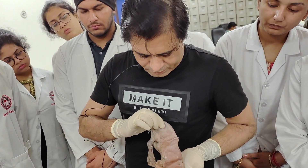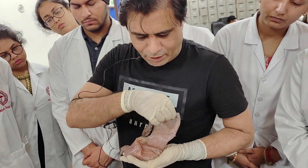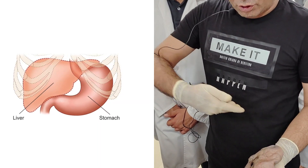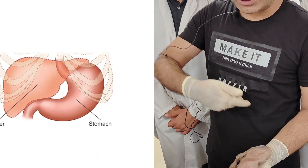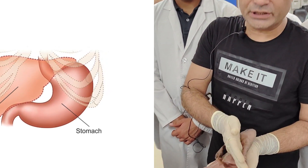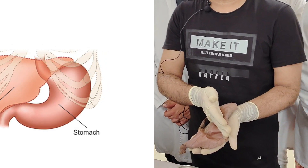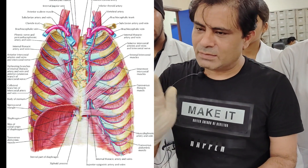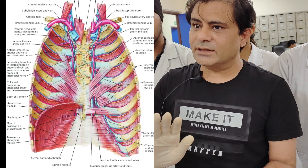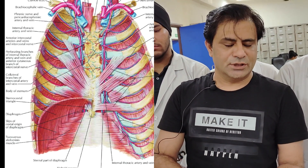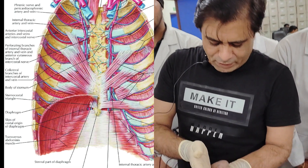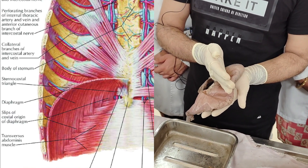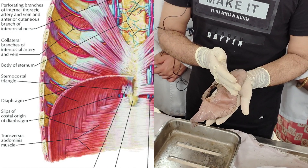The important point is that if we keep it like this, this is our left coastal margin. The coastal margin will not be touching this — why? The space. Posteriorly, the coastal margin, there is a muscle covering and that is transverse abdominis. So remember, the muscle transverse abdominis separates the stomach from the coastal margin.